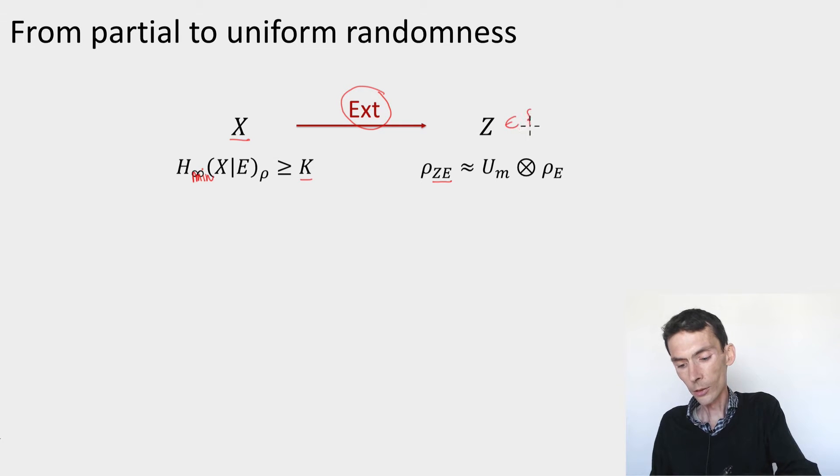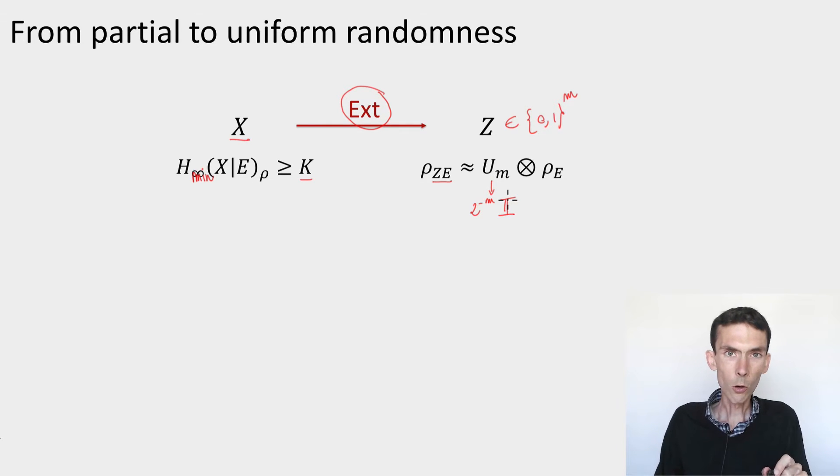Z will be an m bit string, which is such that the joint distribution of Z and the side information E is uniform on Z. This is the uniform distribution, so it's shorthand for totally mixed state on m bits, tensored with the side information E. So that's our goal.